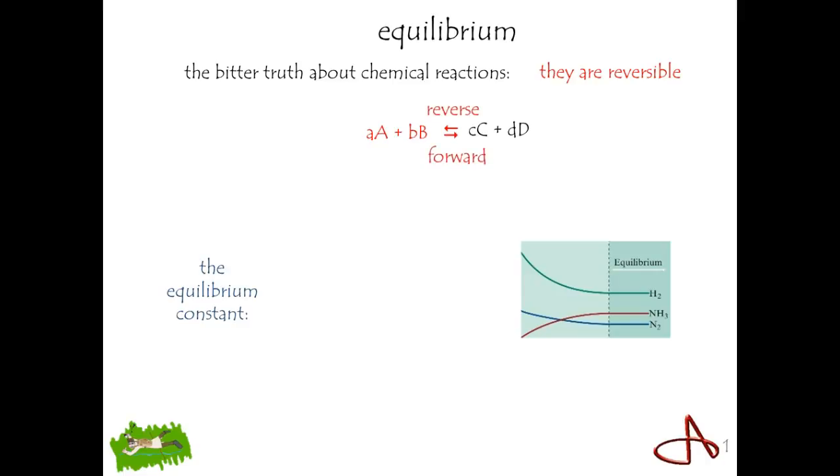So we use these double arrows to imply chemical equilibrium. If you see a forward arrow, it's supposed to mean, in theory, that there is no equilibrium.